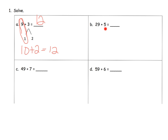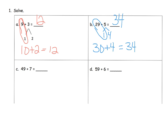Let's take a look at the next one. We've got 29 plus 5. Since 29 is pretty close to 30, it just needs one more, so let's decompose that 5 to 1 plus 4. So 29 plus 1 is 30, plus 4 gives us 34.